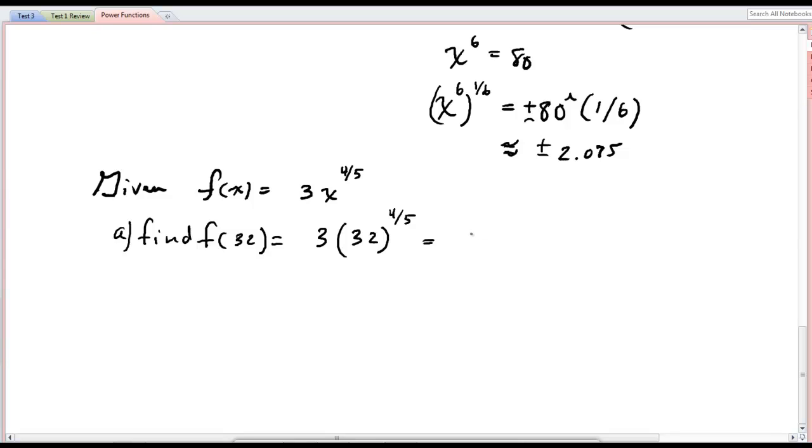Let's see. That is the fifth root of 32 to the 4th power. What's the fifth root of 32? It's 2. So taking that to the 4th power is 16 times 3 is 48.